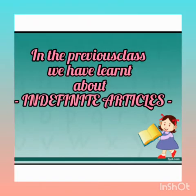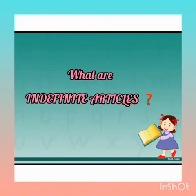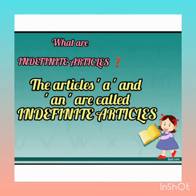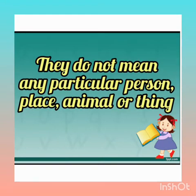In the previous class, we have learned about indefinite articles. What are indefinite articles? The articles 'a' and 'an' are called indefinite articles. They do not mean any particular person, place, animal or thing.